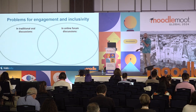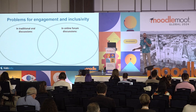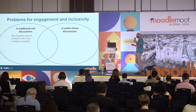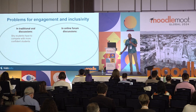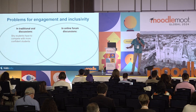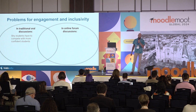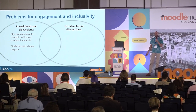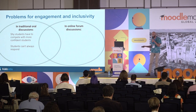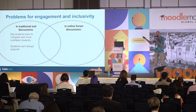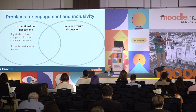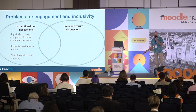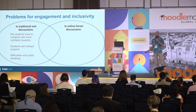So what are some of these problems for engagement and inclusivity in class discussions? When it comes to traditional oral discussions, one of the main ones is that shy students often have to compete with more confident students. It's really easy for a confident, charismatic student to raise their hand, assert themselves, and say what they think, but it can be very difficult for a shyer student to follow that. Another frustration is students can't always respond to everything they'd like to, because in an oral discussion only one student can speak at a time. And of course, there are many students who have difficulties with public speaking, especially in front of their peers.